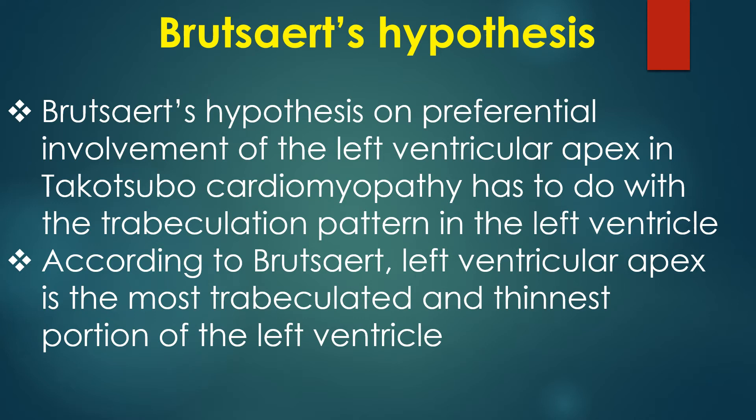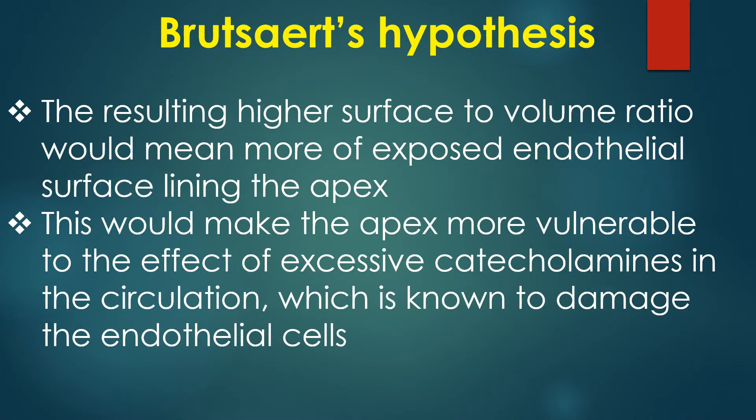According to Brutzard, the left ventricular apex is the most trabeculated and thinnest portion of the left ventricle. The resulting higher surface area to volume ratio means more exposed endothelial surface lining the apex. This would make the apex more vulnerable to the effect of excessive catecholamines in the circulation, which are known to damage endothelial cells.